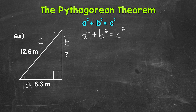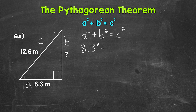Now we can plug in what we are given in order to find the length of that missing leg. So let's plug in 8 and 3 tenths meters for a — so 8 and 3 tenths squared — plus b squared. B is the missing leg, the unknown leg, so keep that as b squared, equals c squared. C is the hypotenuse, that's 12 and 6 tenths meters, so plug that in, and that is squared.